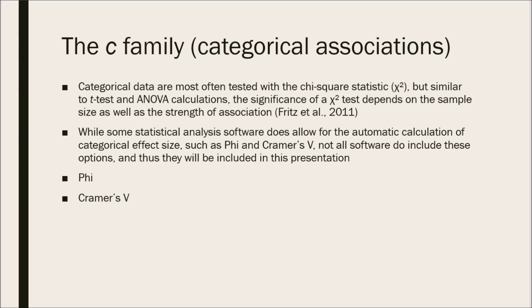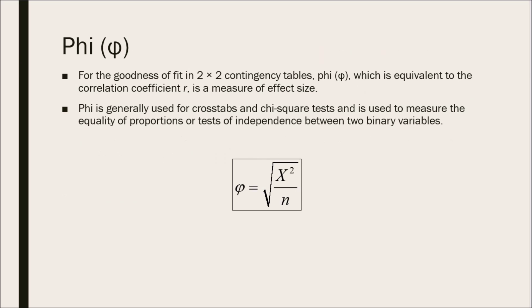The two primary categorical effect sizes that I will be discussing in this tutorial are Phi and Cramer's V. Starting off with Phi. For the goodness of fit in 2x2 contingency tables, Phi, which is the equivalent to the correlation coefficient r, is the preferred measure of effect size.